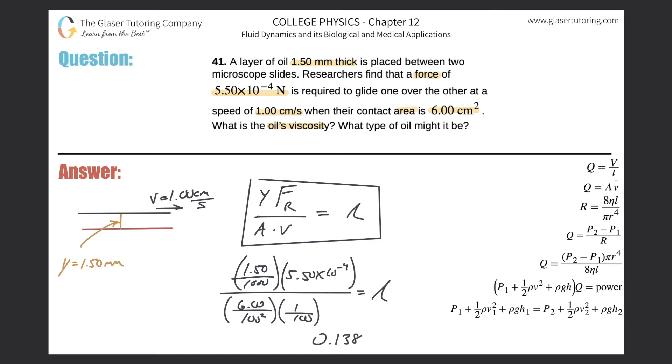Considering three sig figs, so 0.138. This is in the units for viscosity, or pascal seconds, and that's equal to the viscosity. There it is, that's all it is, not too bad.